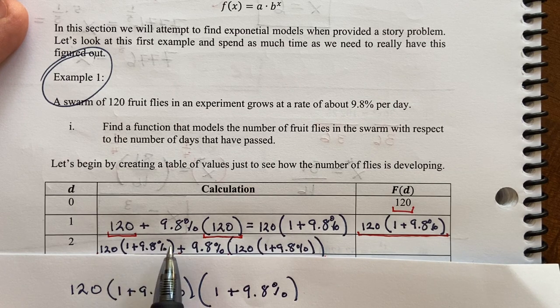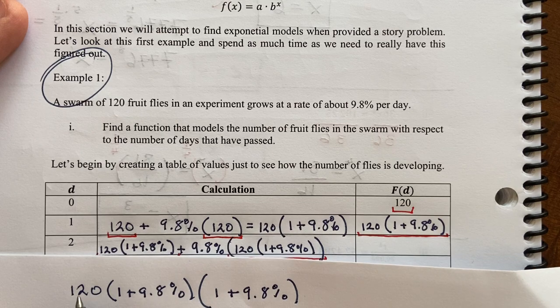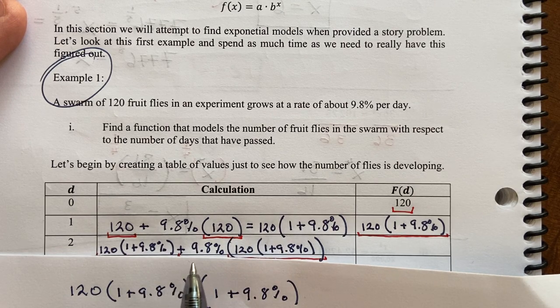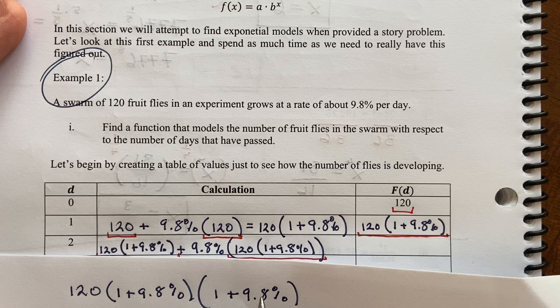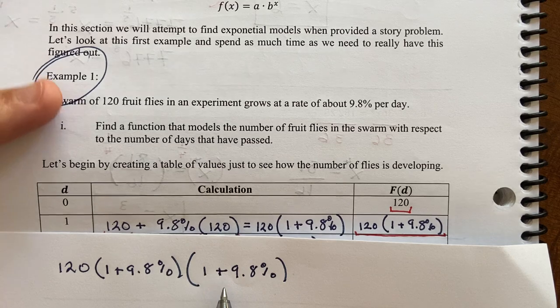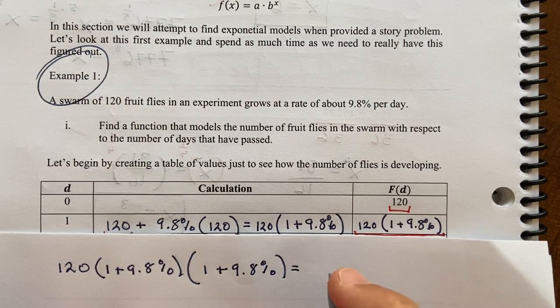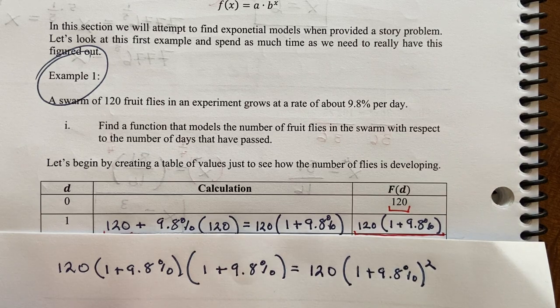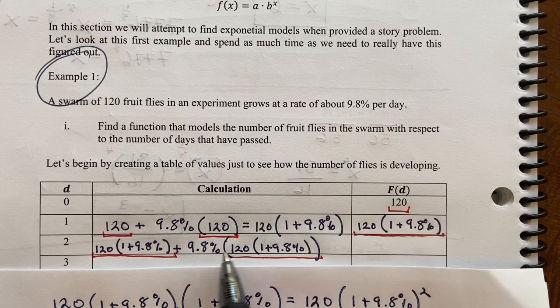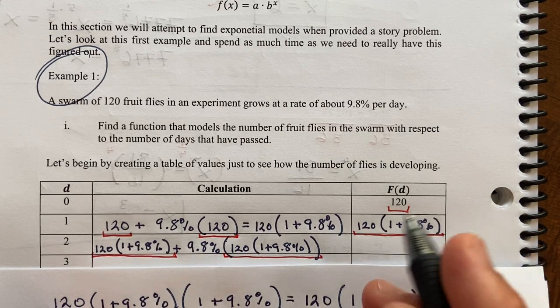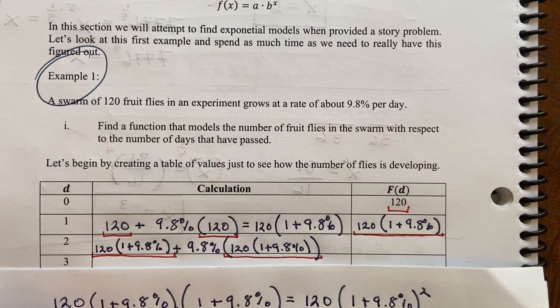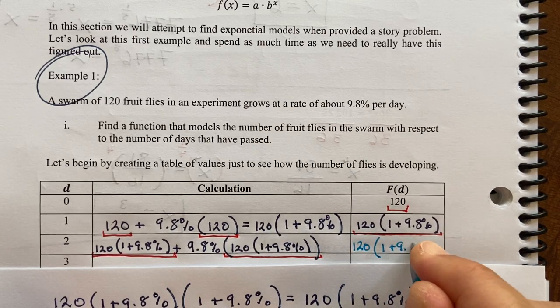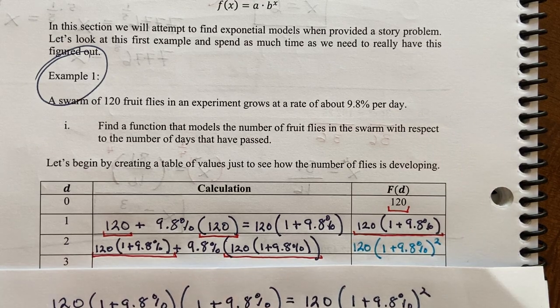So I factored out this entire thing. That's why we have the 1. I took that out as a factor, just leaving the 9.8% behind in that second position. Once you have 1 plus 9.8% times itself, I can write 120 times 1 plus 9.8% squared. I was just running out of room to do all that math in this spot.